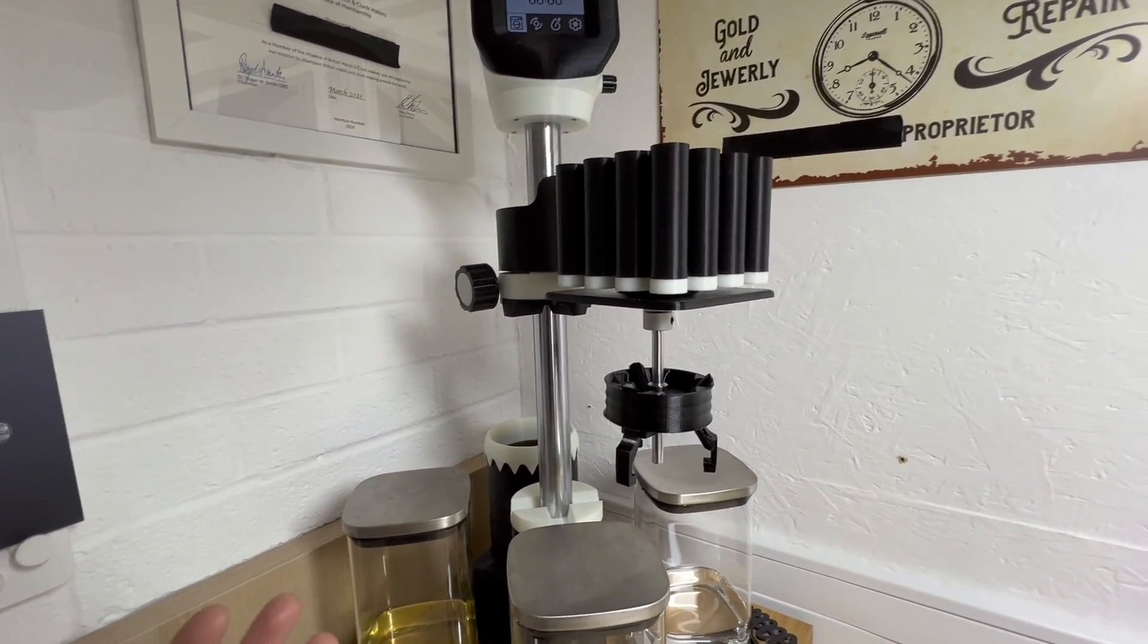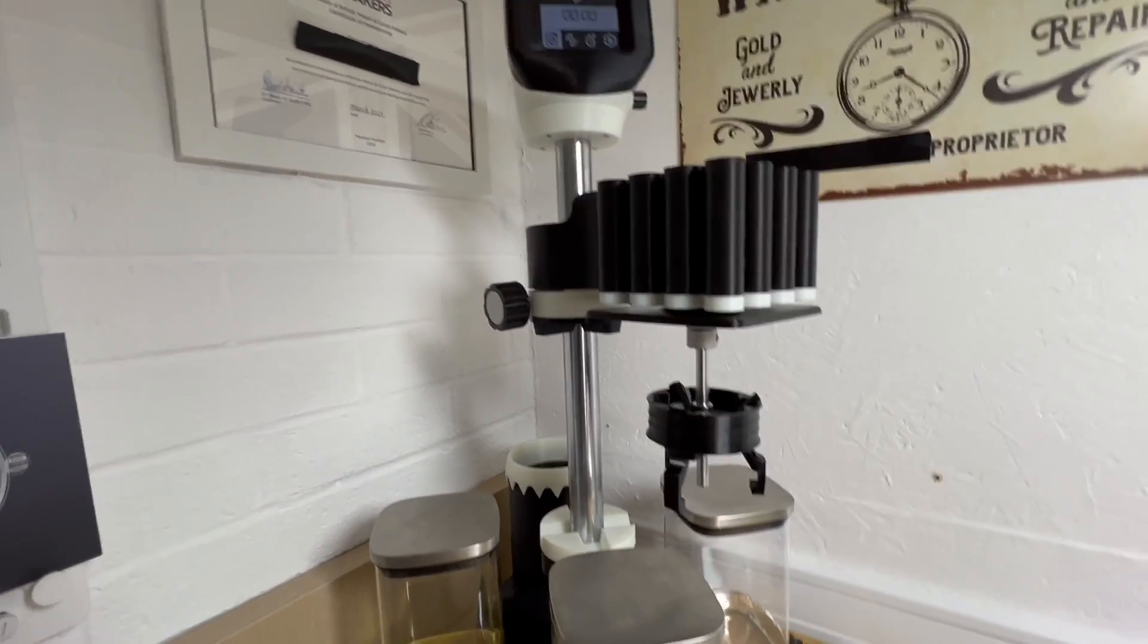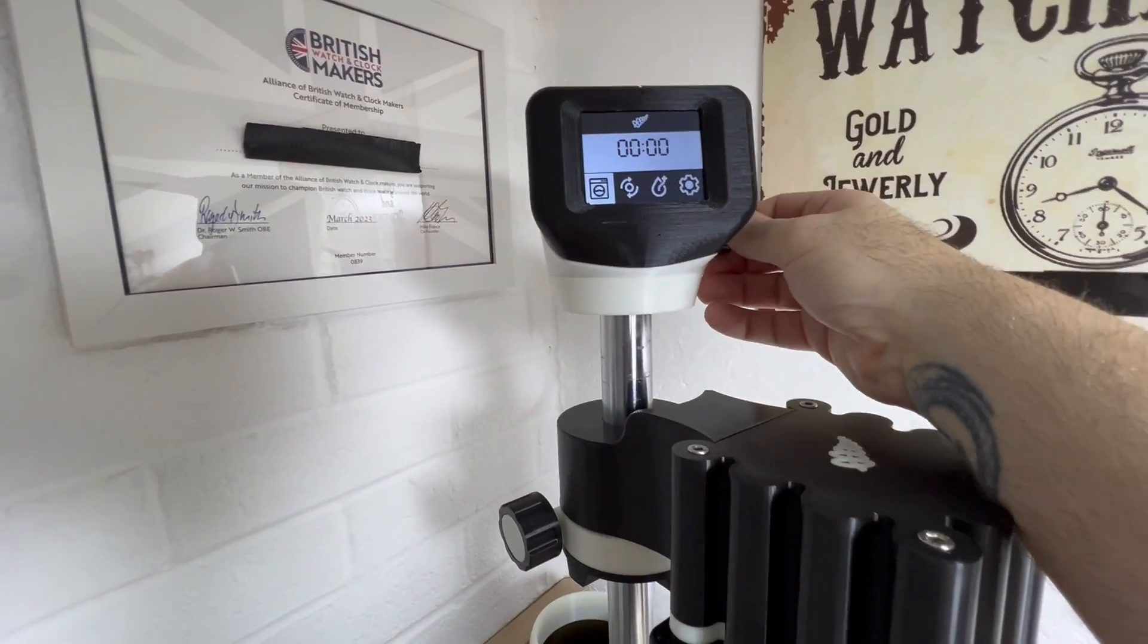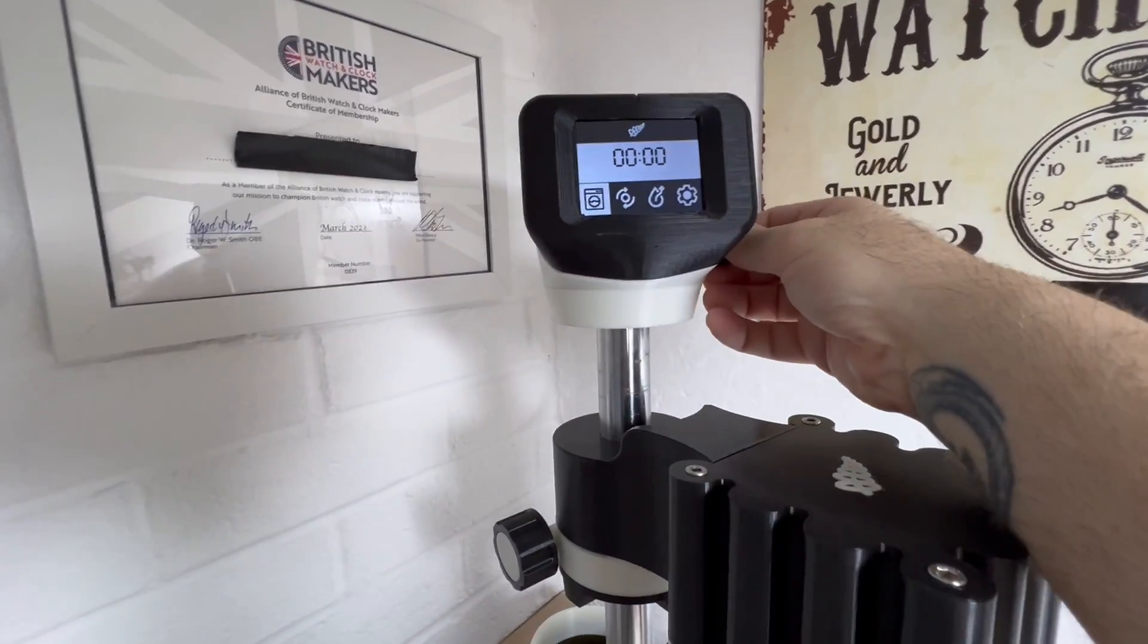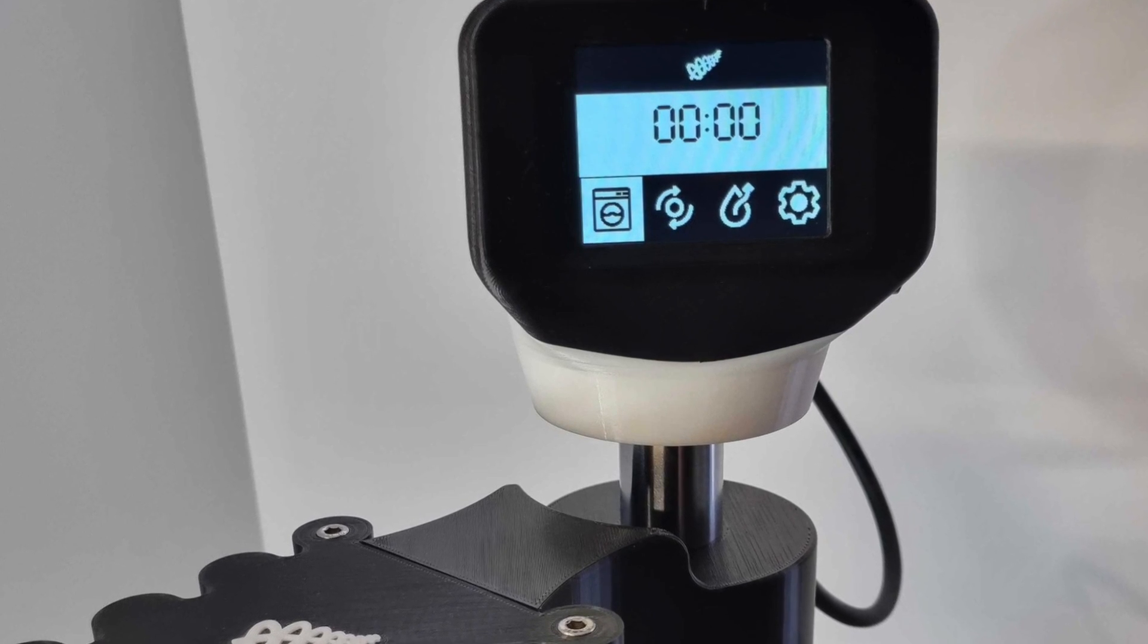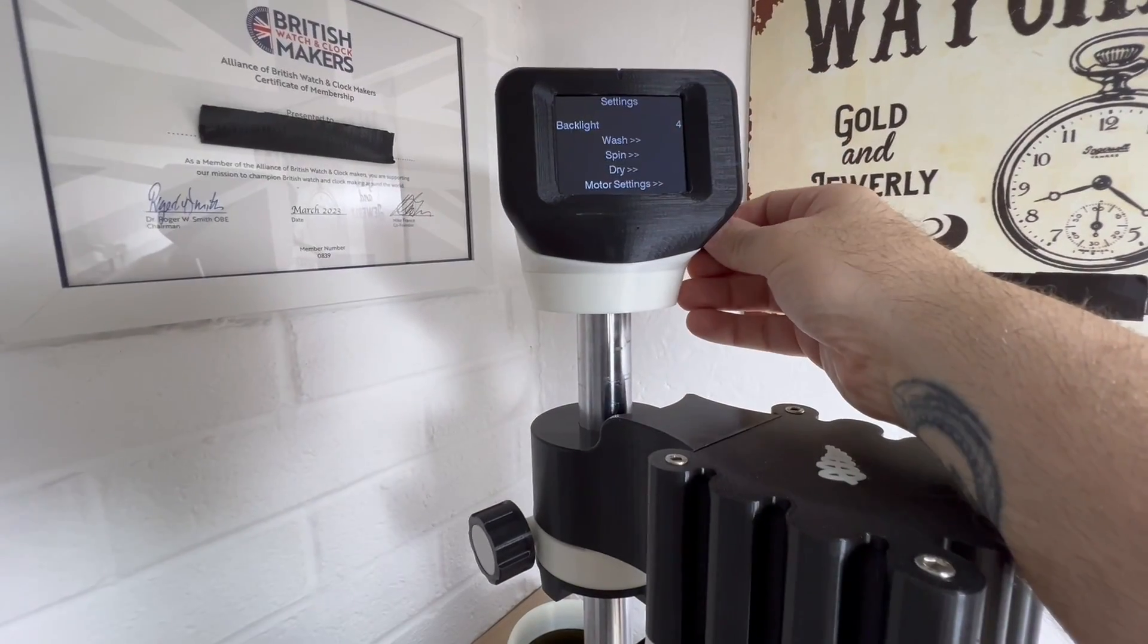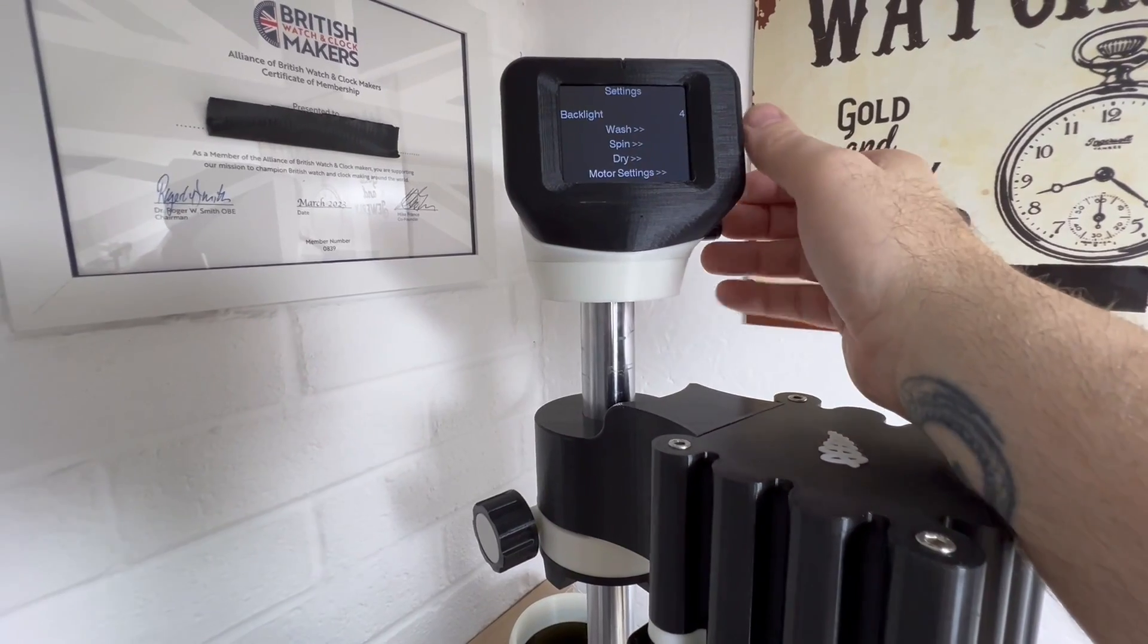I've already done a build video on this. It's one of those things which seems incredibly complicated when you first get it, but step by step you actually realize it's not too bad. Overall, let me show you. Let's start on the screen at the top here. This controls everything. At the moment we're on wash, then we have spin cycle, that is your dry, and that is your systems setup.